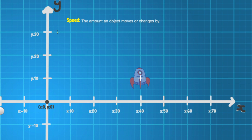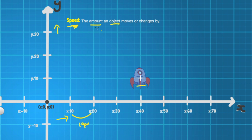Alright, we're just over here in sketchbook. We've got the y-axis going up and the x-axis going across. Both axes are incrementing in 10 pixels. We're going to be using our little spaceship here to understand speed, velocity, and acceleration. So first we're going to be looking at speed, and speed is just the amount an object moves or changes by. Our object is our spaceship, and the amount it's going to move or change by — let's just say down here we've got 10 pixels.